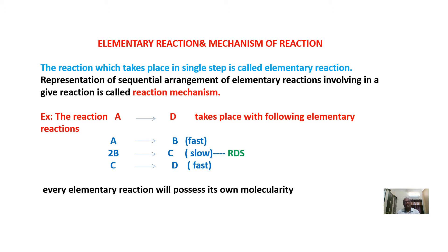To understand this concept, consider a simple example where the overall reaction is A gives D — a complex reaction. This complex reaction follows these elementary steps: Step 1 is A gives B, Step 2 is 2B gives C, and Step 3 is C gives D. Finally, we get the product D.